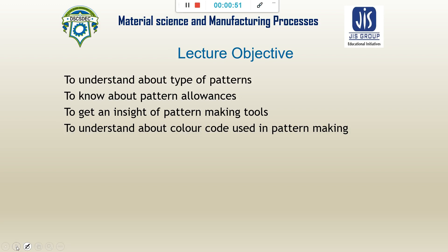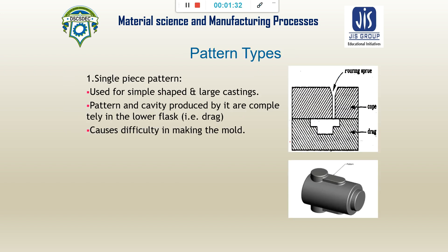The lecture objective is to understand about patterns, to know about the types of patterns, then to know about pattern allowances — what they are, why they are given, and how allowance values vary. Then we will get an insight into the pattern making tools and understand about the color coding used in pattern making.